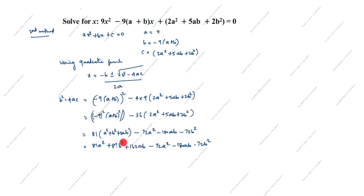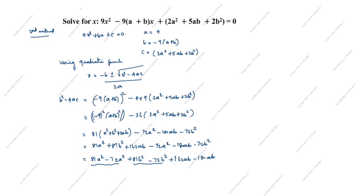Rearranging like terms: (81a²−72a²) + (81b²−72b²) + (162ab−180ab). Simplifying: 81a²−72a² = 9a², 81b²−72b² = 9b², and 162ab−180ab = −18ab.